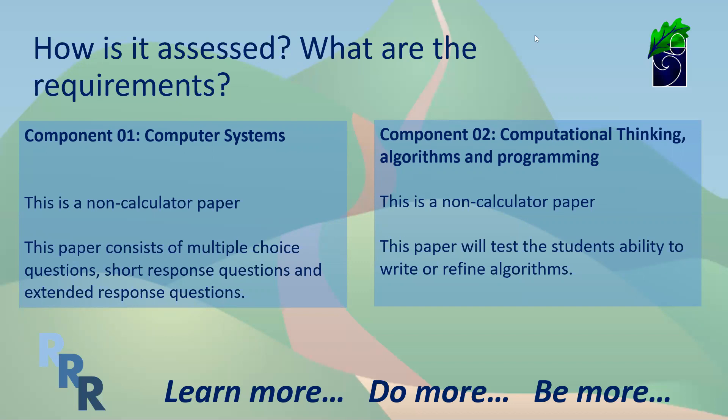I often call component two the programming paper. This paper will test the pupils' ability to write and refine algorithms to solve problems, and again this will be done on paper. So pupils will learn to program through Python, but when it comes to doing the real written exam, it will all be assessed via their code, which will be handwritten. This is a paper that we've historically done exceptionally well in over the years due to the amount of programming preparation that pupils undertake. Both papers are an hour and a half long, 80 marks, and evenly weighted at 50 percent.